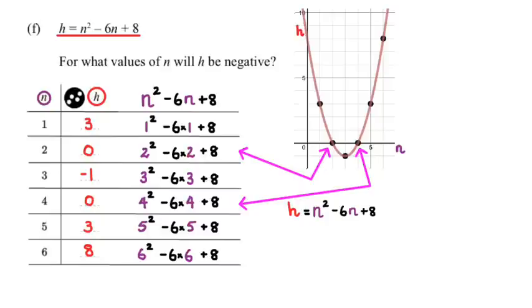So we're trying to say that h has to be negative, so we're looking for 0 is greater than n squared minus 6n plus 8 has to be less than 0.